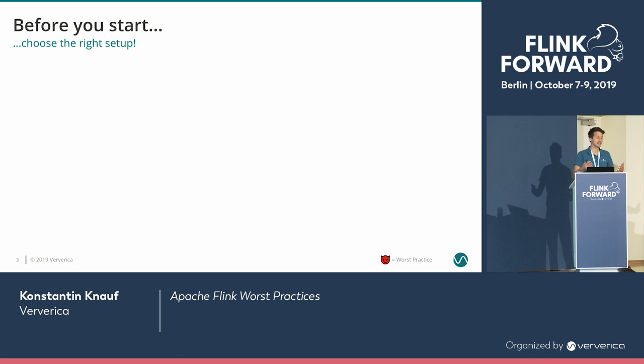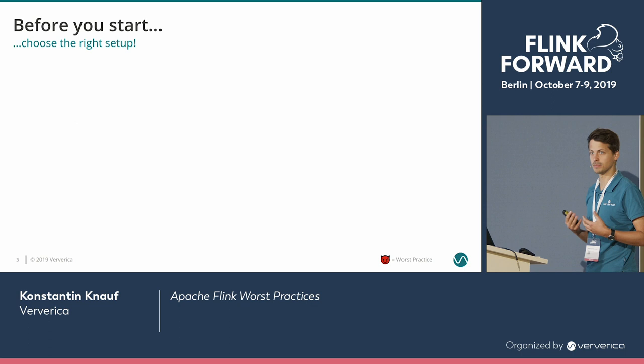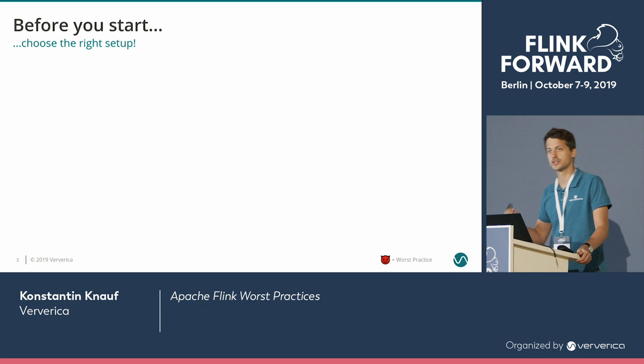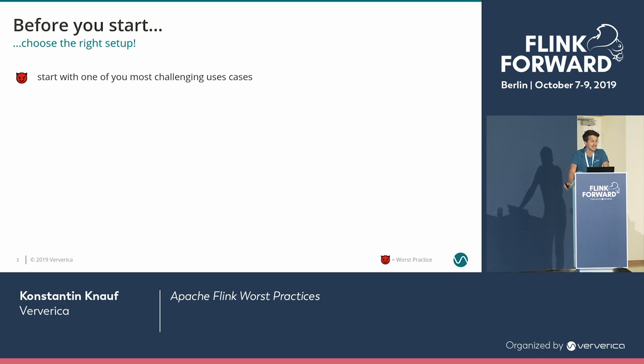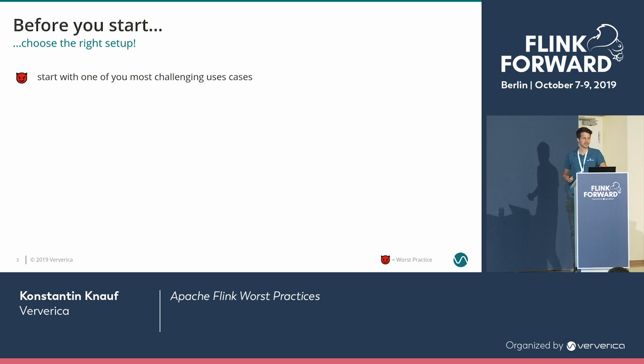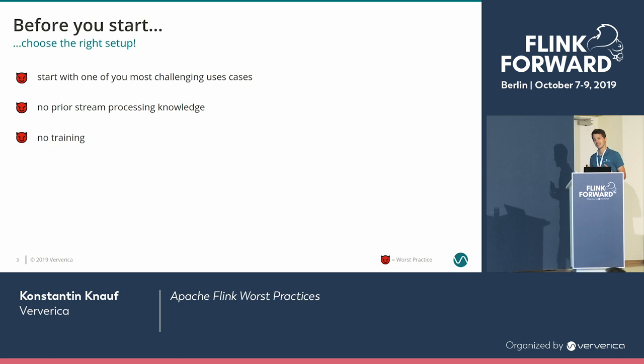We'll start with project setup. The important part here is to get a good use case and get the right people in the team. If you're looking for a use case to start with Apache Flink, don't start with something simple — start with your most challenging, business-critical use case. Get as much management attention on it as possible. And when looking at the team, make sure there's no prior stream processing knowledge — there's just bias. Basically, let them learn that on the project.